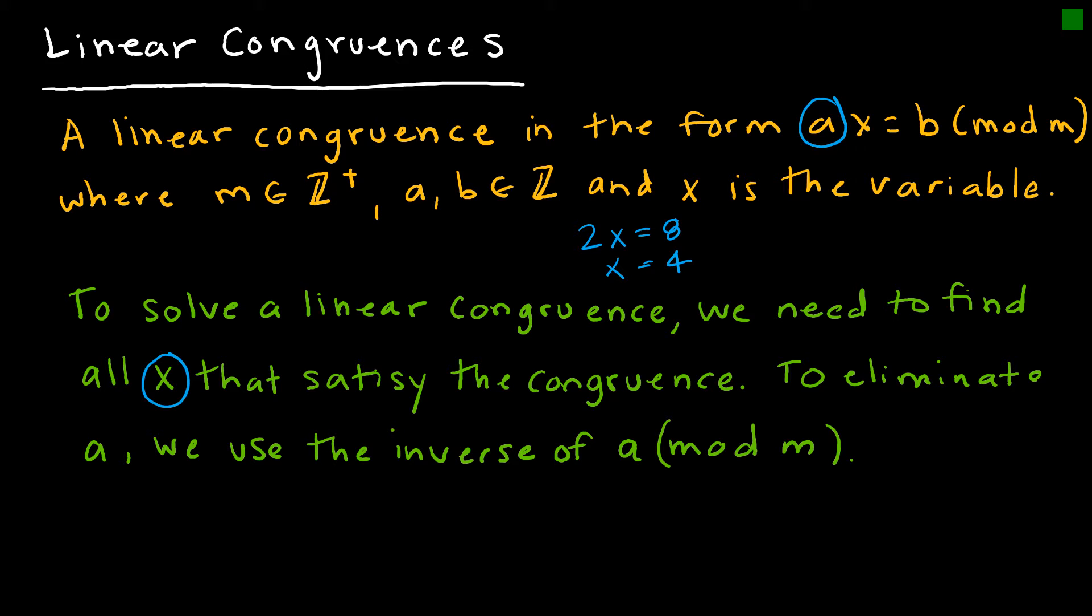What I'm looking for is essentially to try to eliminate the A, because then I would be left with X equals B mod M, and we know how to handle that situation. So in order to eliminate the A, we must learn how to find the inverse of A mod M.